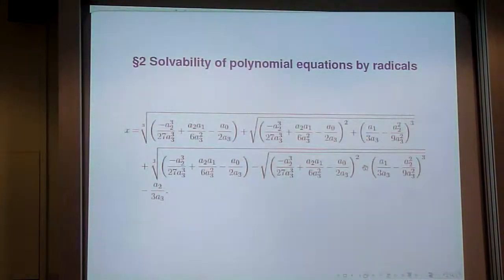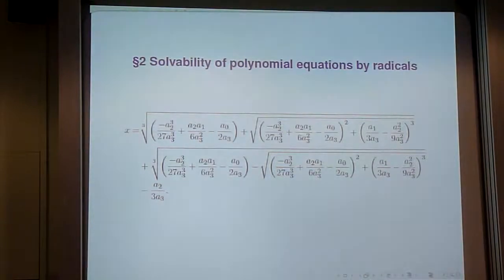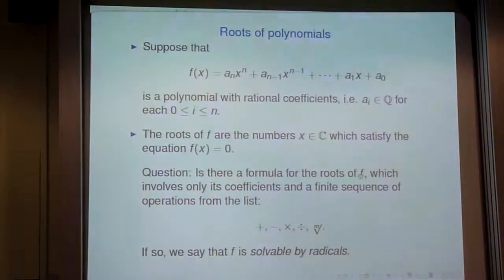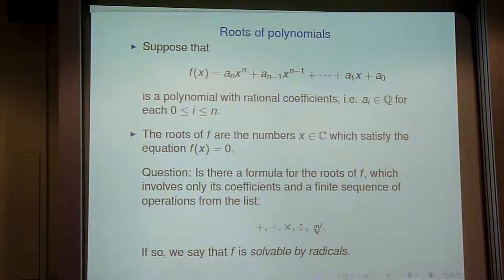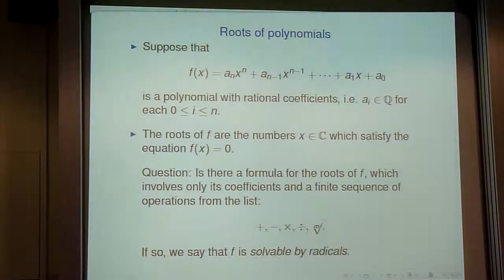The next representative problem is whether you can solve polynomial equations by radicals. If I have a polynomial with rational coefficients — aₙxⁿ + aₙ₋₁xⁿ⁻¹ + … + a₀ — the question is: is there a formula for the roots involving only the coefficients and a finite sequence of operations: addition, subtraction, multiplication, division, and taking mth roots for any positive integer m?